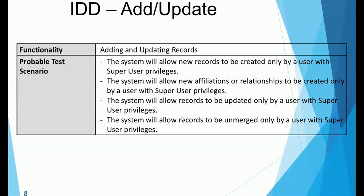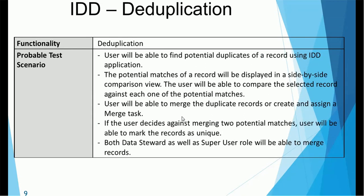We also need to make sure we can add or update records. The system will allow new records to be created only by users with super user privilege, if that is how it is configured. Similarly, creating new affiliations or relationships requires super user privilege. The system will allow records to be updated and unmerged only by super user privilege — though these use cases may vary in your implementation, so make sure you capture all relevant use cases for your specific project.